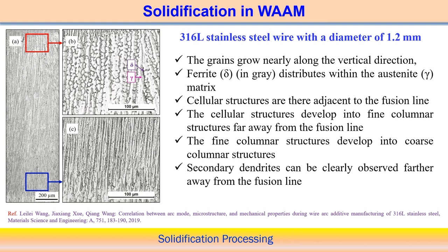For 316 stainless steel deposition, grains usually grow nearly along the vertical direction. Ferrite distributes within the austenitic matrix — the gamma matrix in steel. The cellular structure usually occurs adjacent to the fusion line, and cellular structures develop into fine columnar form further away from the fusion line.